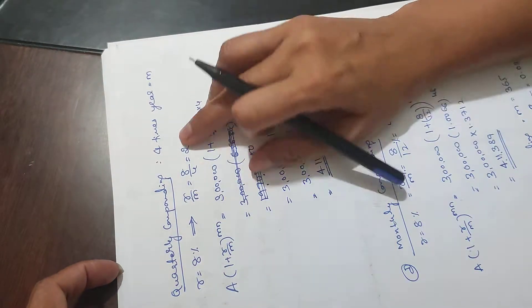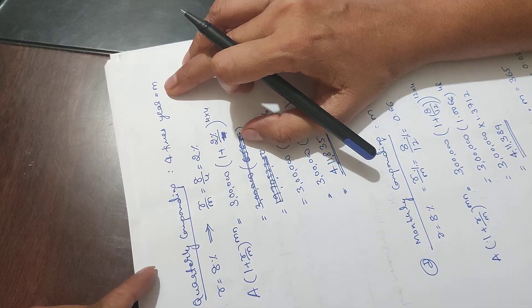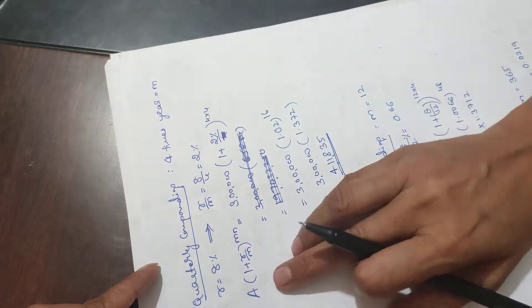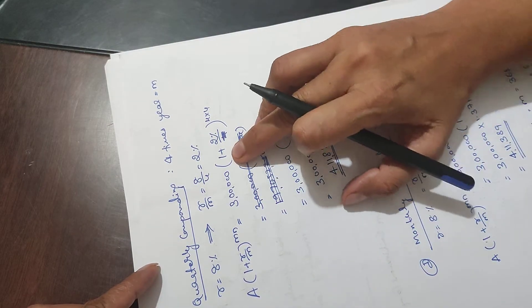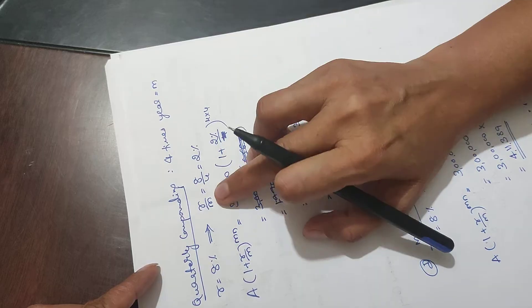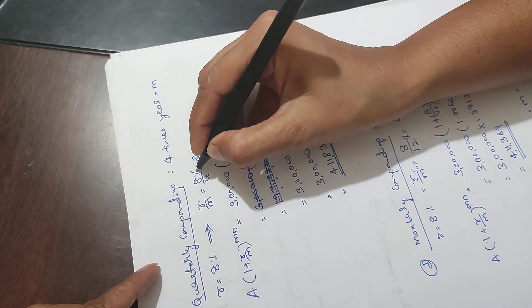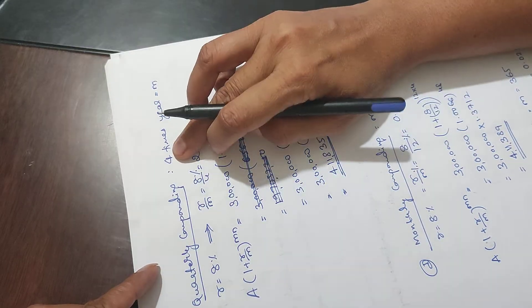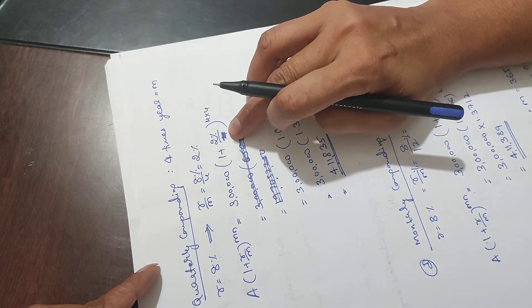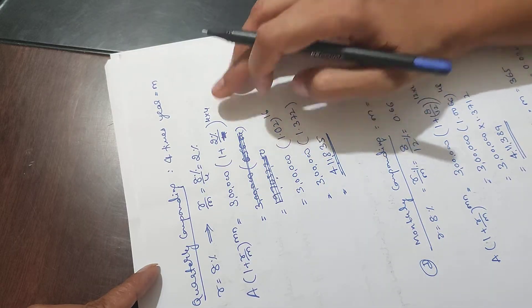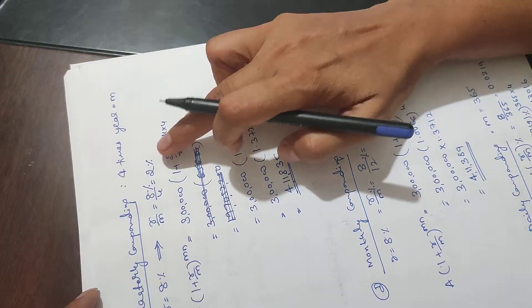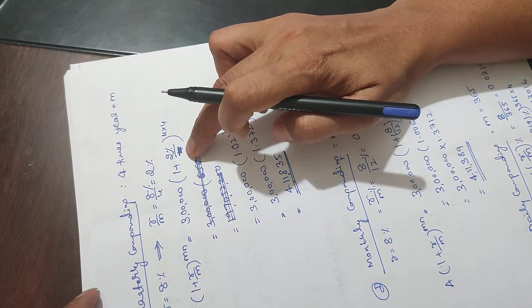Quarterly compounding is 4 times a year, so M equals 4. We take 3 lakh times 1 plus 8 percent divided by 4. That is R by M equals 2 percent.